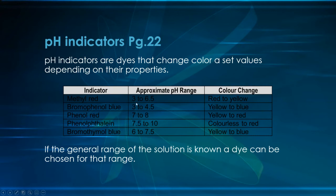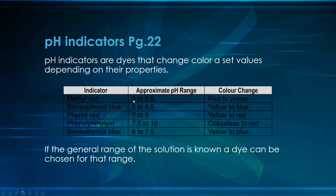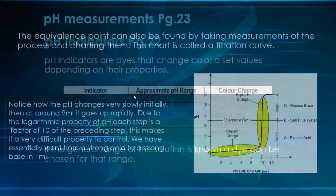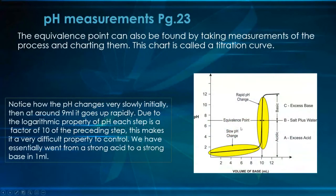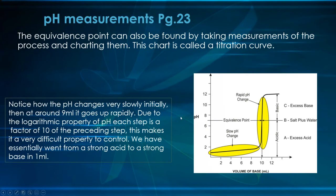The equivalence point can be found two ways: through color-changing pH indicators, or through pH measurements. pH indicators are dyes that change color at set pH values — litmus paper being one example. There are different indicators for different ranges of the pH scale, and you can buy strips with one or multiple indicators. You don't need to memorize all of them, just know that different indicators exist for different pH levels.